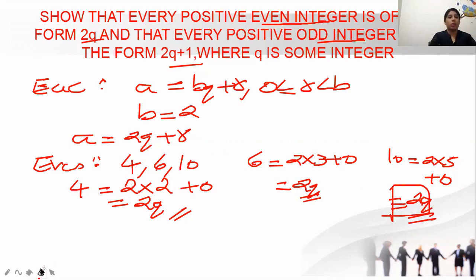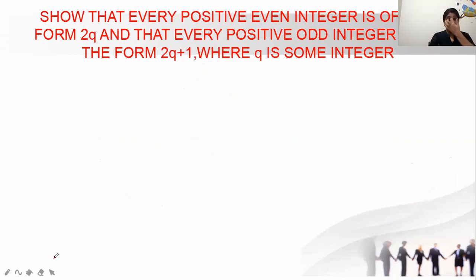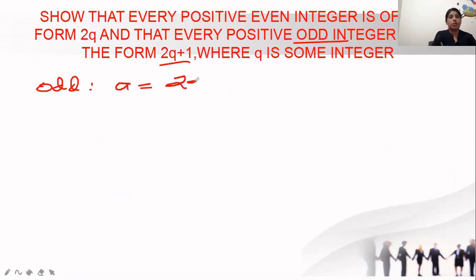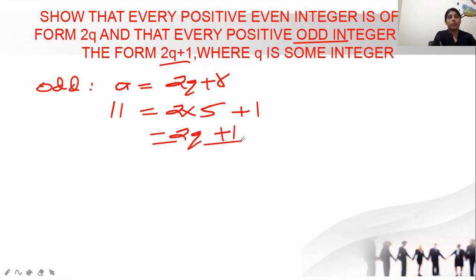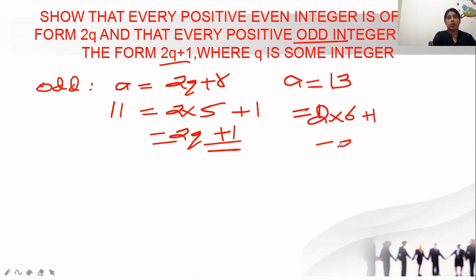Now we check for 2q plus 1, that is the odd integer case. Taking any odd integer, a equals 2q plus 1. For example, if I take 11: 2 into 5 is 10, plus remainder 1 — so this is in the form 2q plus 1. So every even integer is in the form 2q and every odd integer is in the form 2q plus 1.